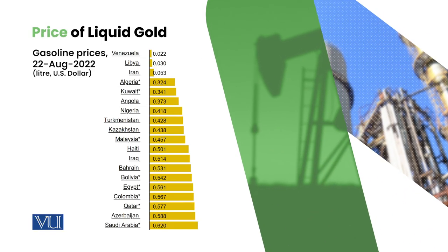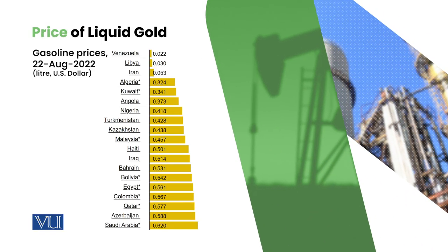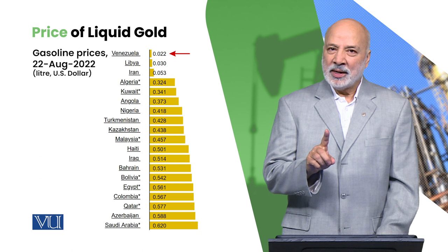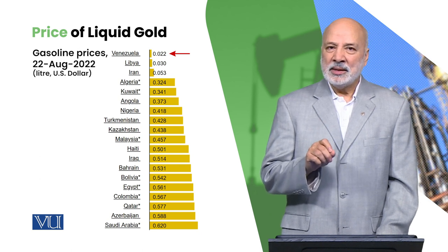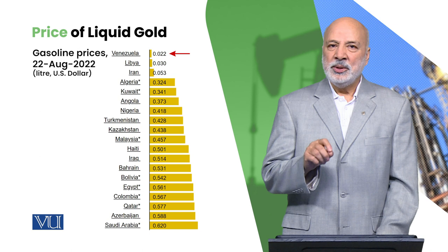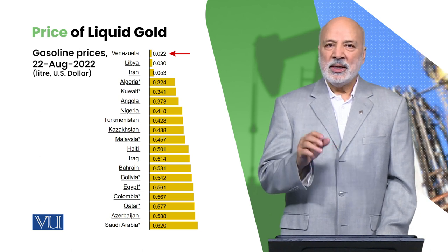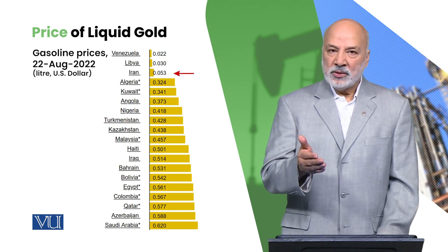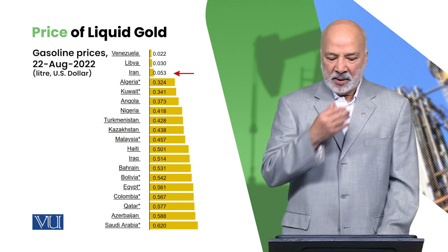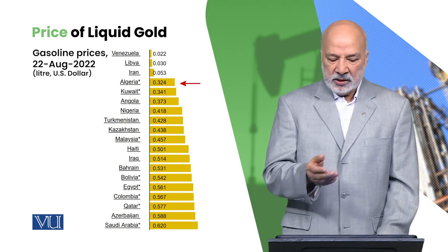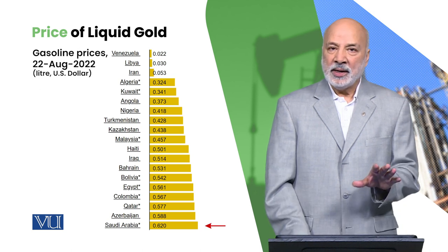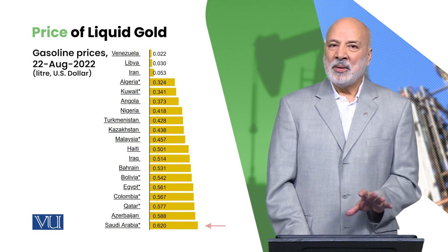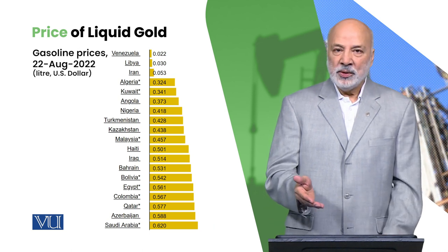There are many countries. Gasoline prices in 2022: Venezuela is $0.022 per liter. You will know that Venezuela is in a very bad situation, but because the country's oil production is very low, the oil prices domestically are very low. Libya, Iran — Venezuela and Libya are in bad shape, yet the oil price there is also low. Algeria and similar countries as well. Saudi Arabia is now $0.62 per liter.